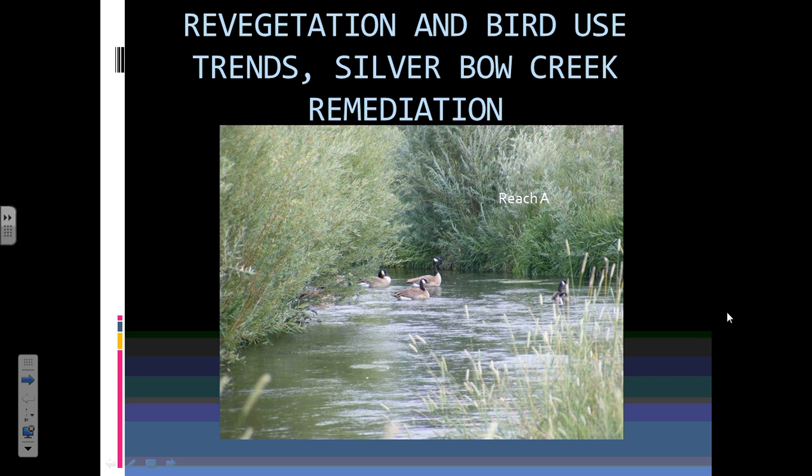So how would you learn about the affinities for plants and species for habitat? From my experience — and I think I've probably done more revegetation monitoring than anybody in Montana — when you're doing a baseline, that's how I got started, the baseline for coal. By the time you're done doing a baseline, you know all the plants and you know where they grow. That's one way to do it, or you can actually do a study.